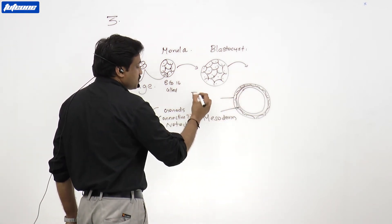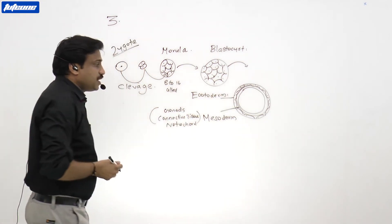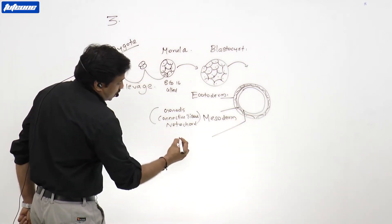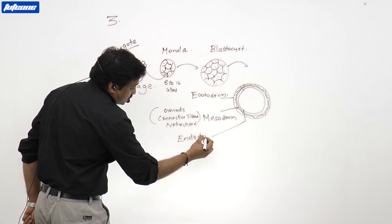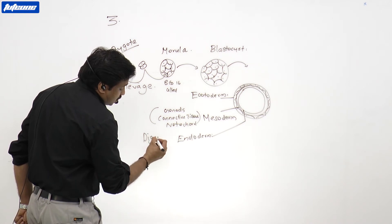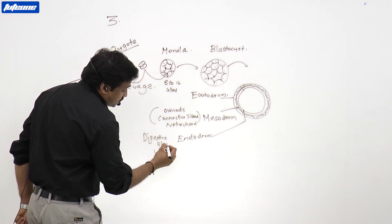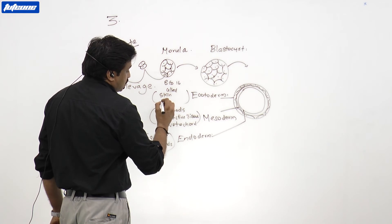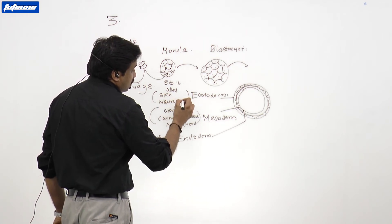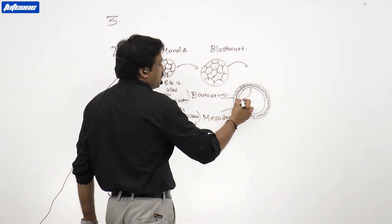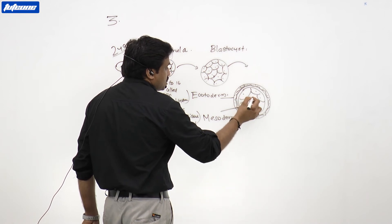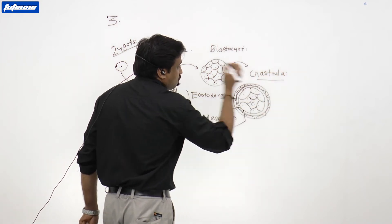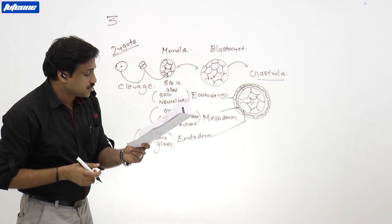The ectoderm, endoderm, and mesoderm are called primordial germinal layers because germination processes occur in them. The innermost layer is the endoderm, from which digestive glands are embryologically derived. Ectoderm gives rise to skin, epidermis, and the neural system. This triple-layered structure formed during embryo development is called the gastrula.